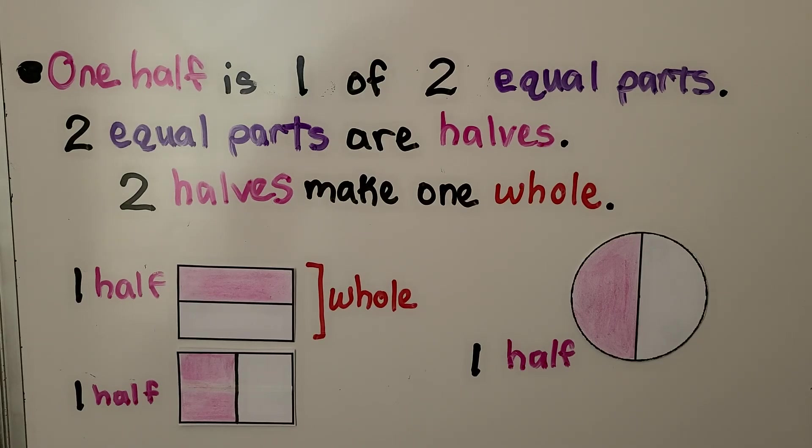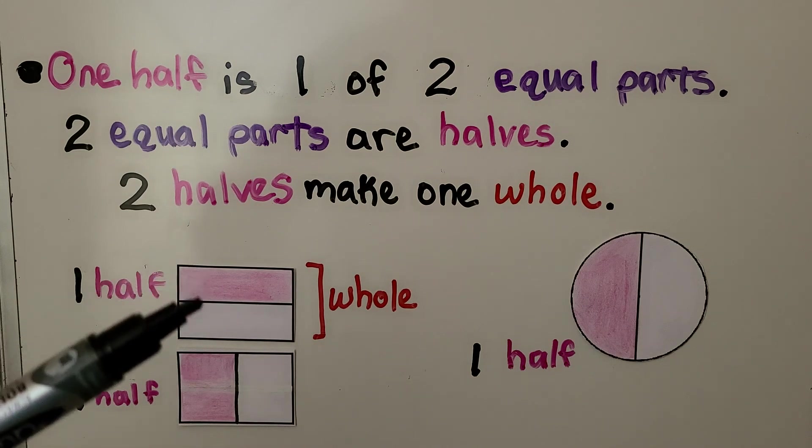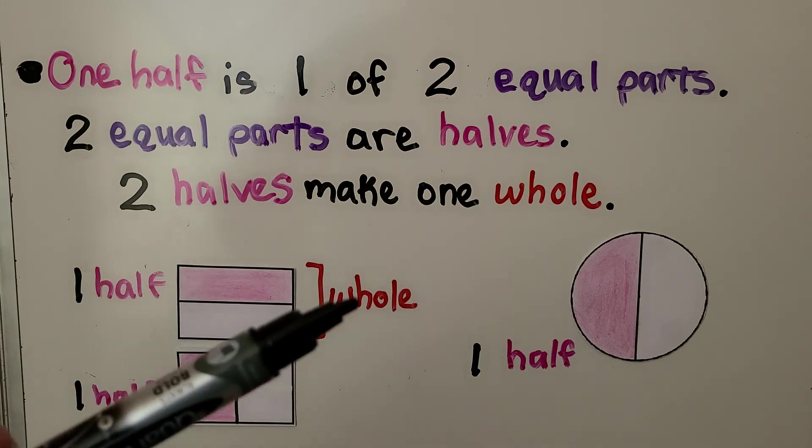One half is one of two equal parts. Two equal parts are halves, and two halves make one whole. Here this pink part is a half, here we have another half, and together they make one whole.